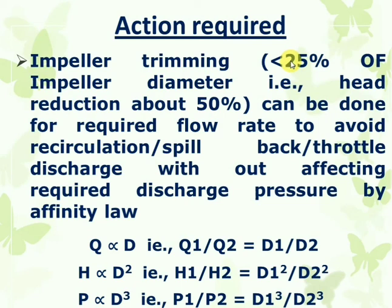Why should we not exceed 25% trim? Because efficiency will drastically come down and head reduction will be drastic — falling below 50% — which will affect the required discharge pressure. Internal circulation will increase, cavitation will be more, impeller and casing pitting will be more, and energy loss will be more. Compared to the energy gain, the pump life will also come down. So you should not trim the impeller greater than 20-25% of its original diameter.